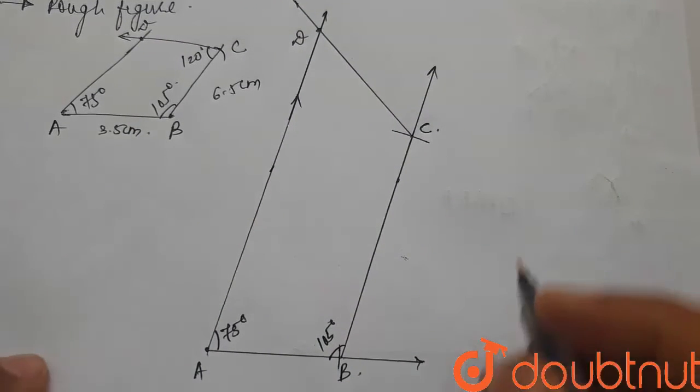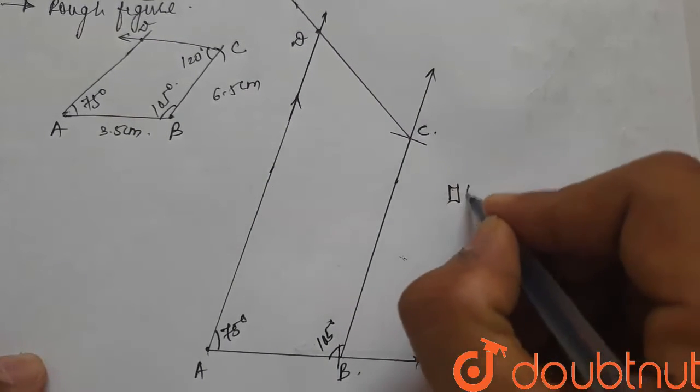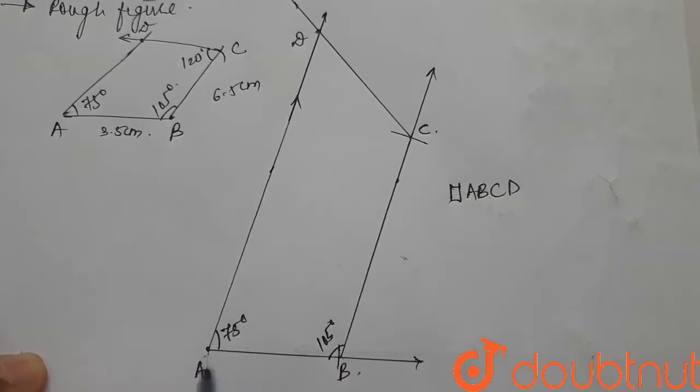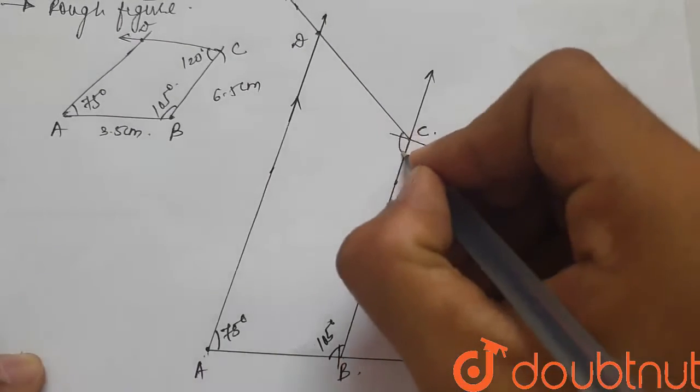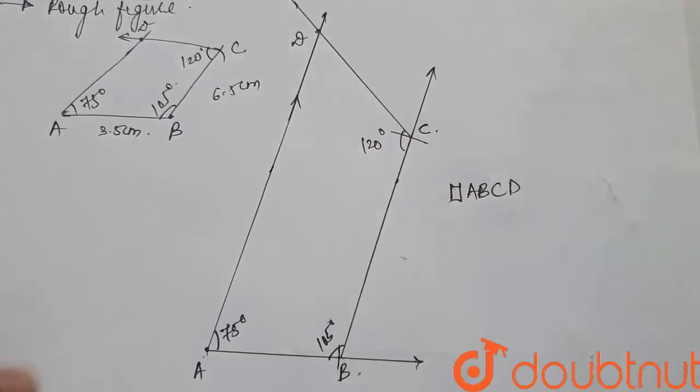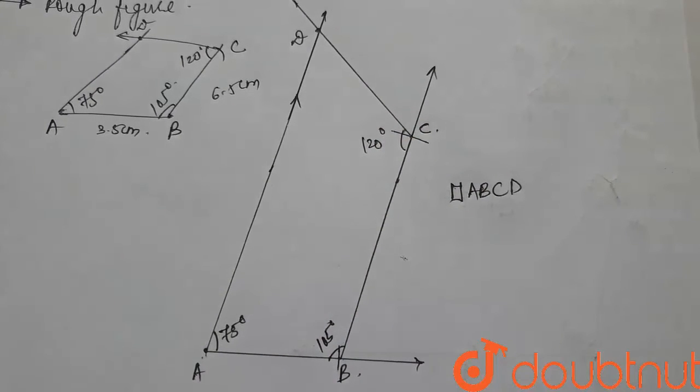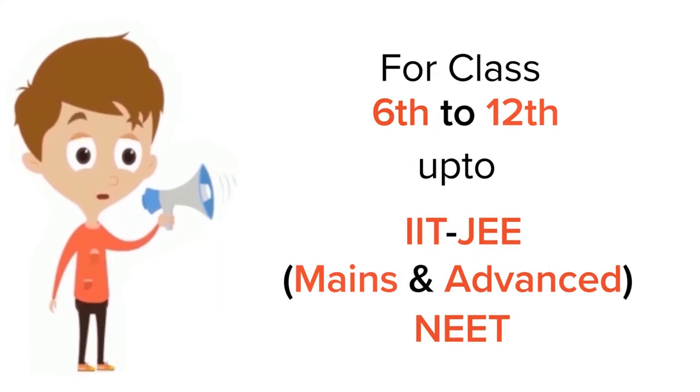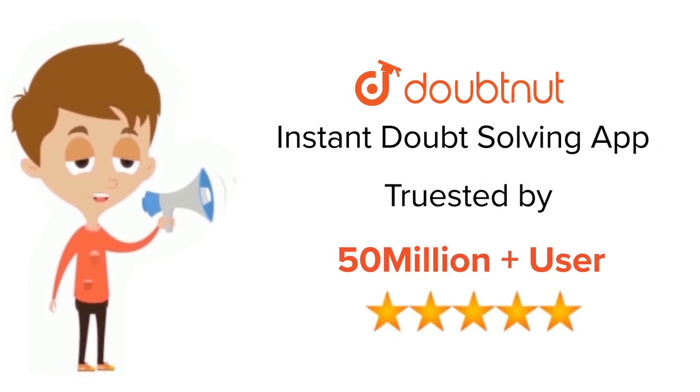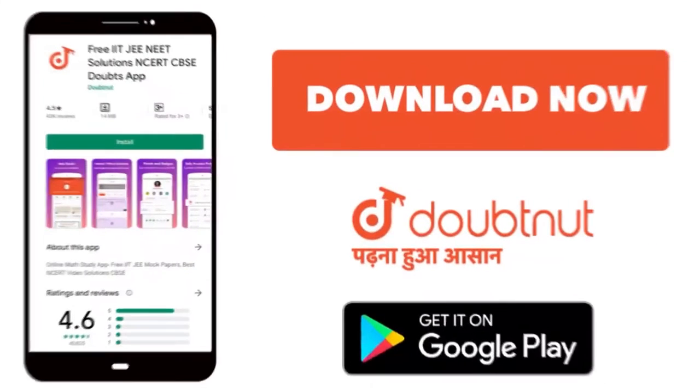Hence, we have successfully made our quadrilateral ABCD with A 75 degrees, B 105 degrees and C 120 degrees. Thank you for class 6 to 12, IIT and NEET level trusted by more than 5 crore students. Download Doubtnit app today.